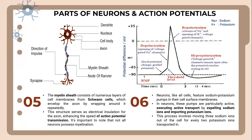It is important to note that not all neurons have myelination. Neurons, like all cells, feature sodium-potassium pumps in their cell surface membrane. In neurons, these pumps are particularly active, executing active transport by expelling sodium ions and importing potassium ions. This process involves moving three sodium ions out of the cell for every two potassium ions transported in.